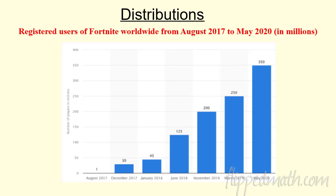All right, here we go. Let's take a look at the last section in the chapter. We're going to talk about data distribution. What is that all about? Well, sometimes we like to know how data is just spread out. So this is Fortnite users from August of 2017 to May of 2020 in millions. How is the data distributed over time? You can see we're getting a ton of players — it is just taking off.